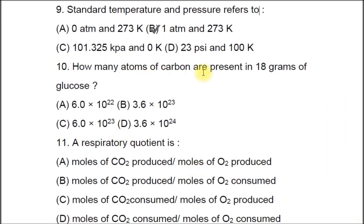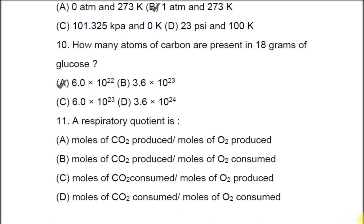Question 10: How many atoms of carbon are present in 18 grams of glucose? A) 6×10²², B) 3.6×10²³, C) 6×10²³, D) 3.6×10²⁴. The calculated answer is A, 6×10²². If you want an explanation of this answer, you can write in the comment section.